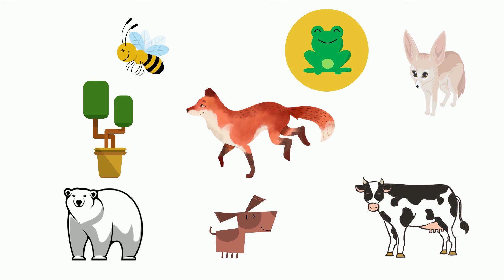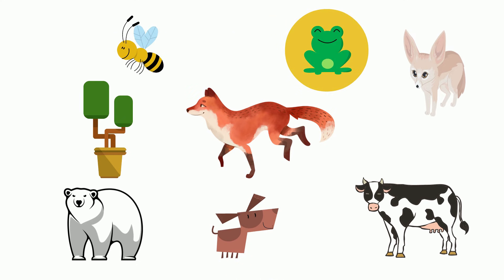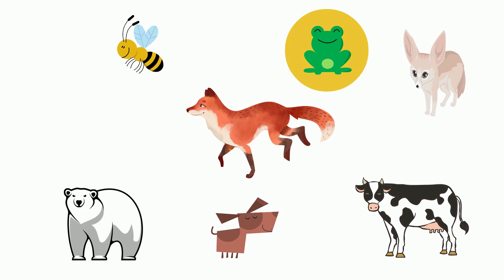Next comes kingdom. There are six kingdoms: Protista, fungi, plant, Animalia, archaea, bacteria, and eubacteria. Foxes are animals and thus fall under the animal kingdom. This eliminates the plant, because it belongs to the plant kingdom.